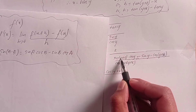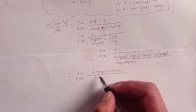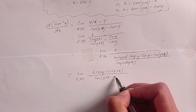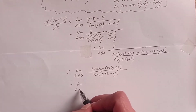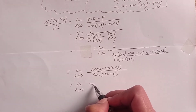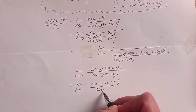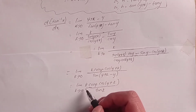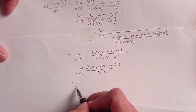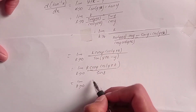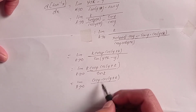So this simplifies to sin(k). Therefore the expression becomes: limit k tends to 0 of cos y dot cos(y+k) divided by sin k, multiplied by sin k divided by k.